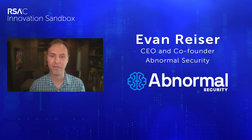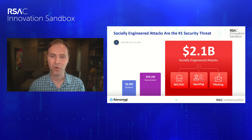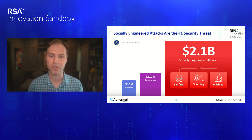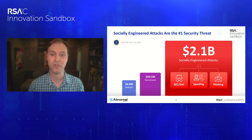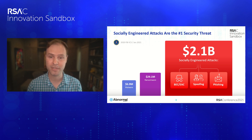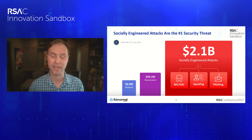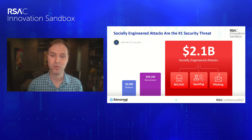Today I'll talk about the number one security threat facing companies and how we stop them. According to the FBI, socially engineered email attacks are responsible for more than two billion dollars a year in financial losses — by far more than any other security threat. They utilize impersonations to steal money and pose an order of magnitude more risk to organizations than well-publicized attacks like ransomware.